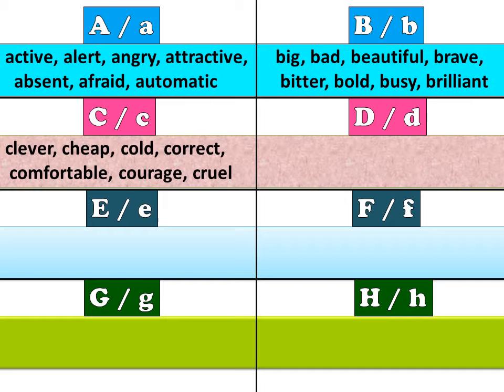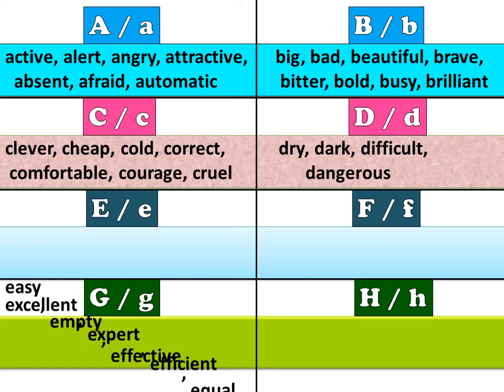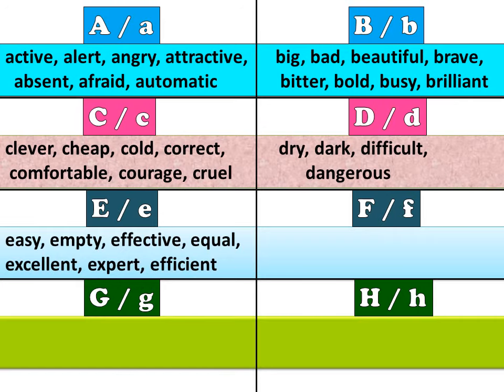C: adjectives starting with C. D includes: dry, dark, difficult, dangerous. E includes: easy, empty, effective, equal, excellent, expert, efficient.